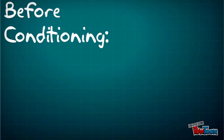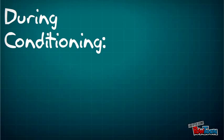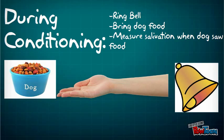Before conditioning, Pavlov would bring his dog food and measure how much it would salivate when it saw the food. During conditioning, Pavlov would ring a bell and bring his dog food and again measure how much the dog salivated when the food was brought to it.